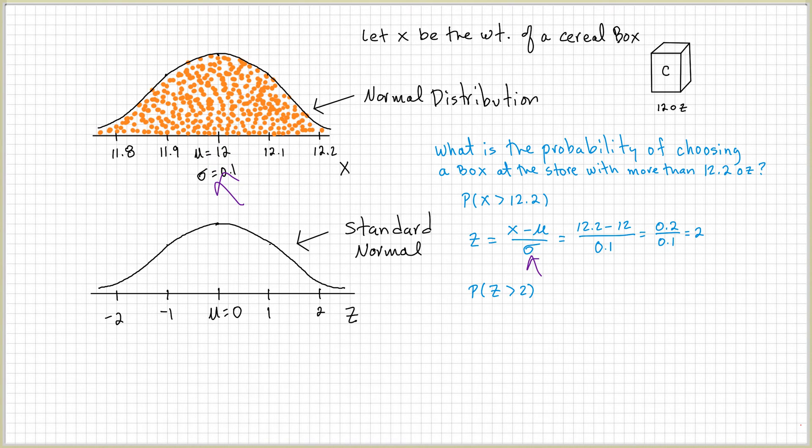Standard deviation is going to be 0.1. You subtract and divide, and you have this answer right here, which is a z-score of 2. So, the probability that the z-score is greater than 2.